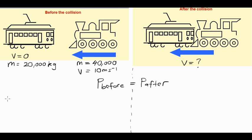OK, so P before. P before consists of the momentum of the carriage. We'll call that PC, plus the momentum of the locomotive. We'll call that PL.